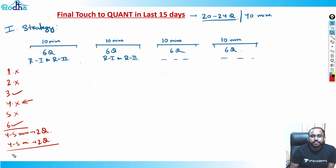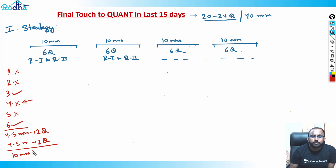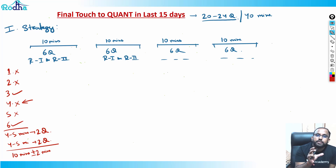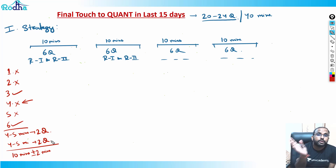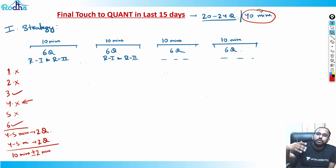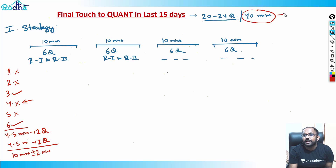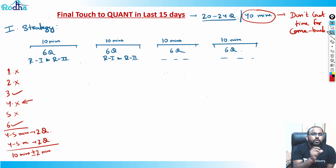It can never be exactly 10 minutes — we're not robots. Take a buffer of plus or minus two minutes, but not more than that. Don't spend more than 12 minutes on a six-question slot, and don't spend less than seven or eight minutes either, because in a 40-minute exam you don't get time to come back to previous questions. This is very important — you can't come back.